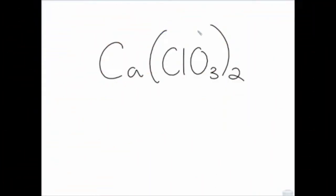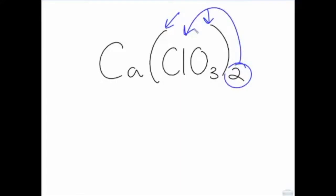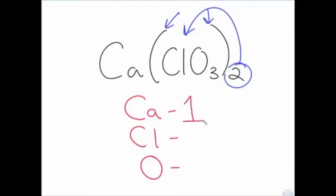Here is a good example: calcium chloride. This is a good one because it has subscripts inside and outside of the parenthesis. Remember, the three applies to just the oxygen, but the two applies to everything inside the parenthesis. Time to list the elements: calcium, chlorine, and oxygen. There is one calcium. Inside the parenthesis, there is one chlorine in chlorate, but the two outside means there are two chlorate ions, so two times one is two chlorines. The three inside the parenthesis means there are three oxygens in chlorate, but two times three is six total oxygens.